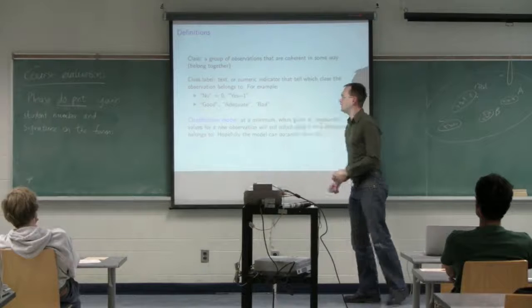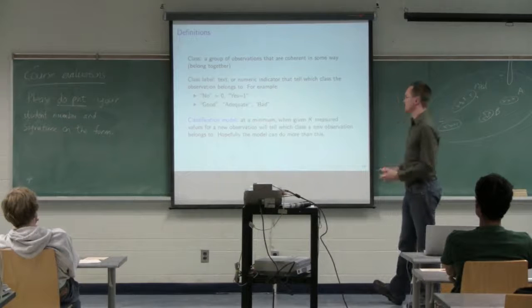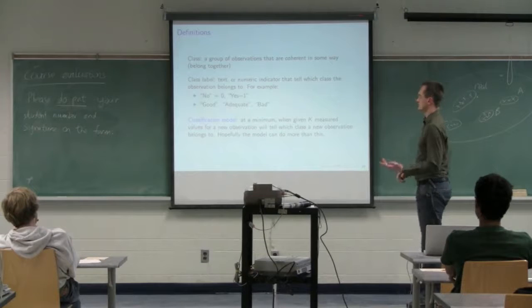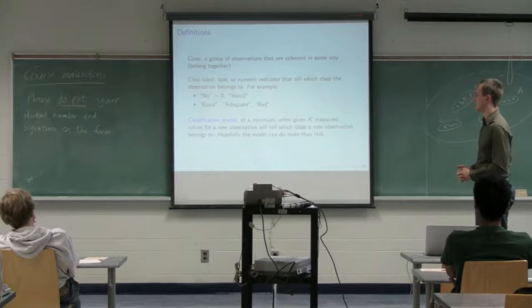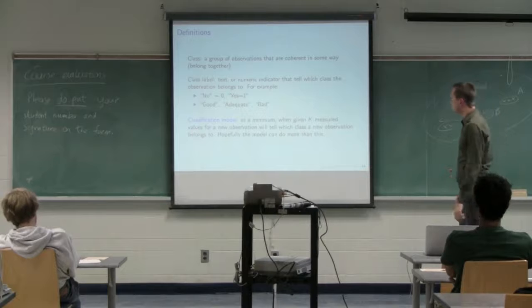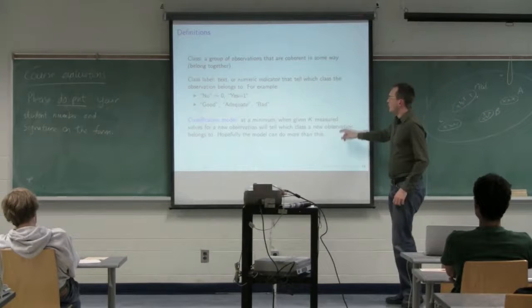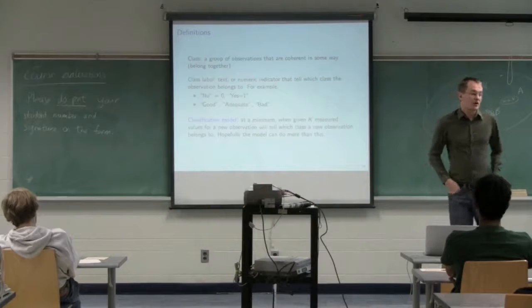I need some mechanism to tell the software which class a particular row of observation belongs to. The obvious ones, you've got no, yes, this is 0, 1. Good, bad, adequate, just 1, 2, 3, or you can just use G-A-B or something like that in the software to tell the class.